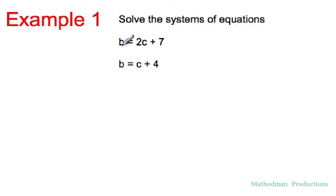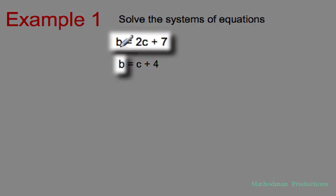You're going to take that equation b. The meaning of b is 2c plus 7. You're going to substitute it for this equation right here. So instead of this b, we're going to replace it with 2c plus 7 and then just write everything else, c plus 4.